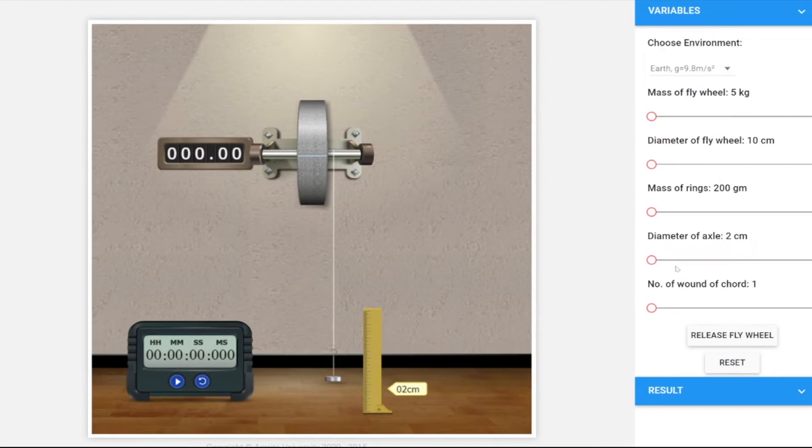Let's vary the axle diameter also. Let's keep it at 3 as a whole number. We can take a decimal also, but let's keep a whole number. Let's release the flywheel and wait for it to stop and note down the next reading.